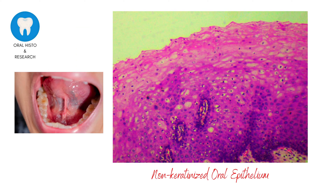Lastly, the non-keratinized epithelium is part of the lining mucosa found on lips, the ventral surface of the tongue, the buccal mucosa, and the soft palate. Histologically, an epithelial layer containing flattened nuclei at the superior surface exists, but lacks a keratin layer. Also, rete pegs and connective tissue papillae are present, but they show less well-defined assembly or are usually shorter compared with keratinized epithelium.